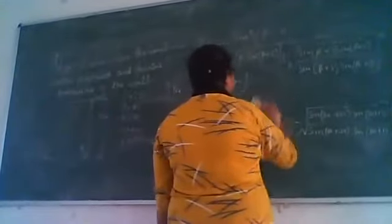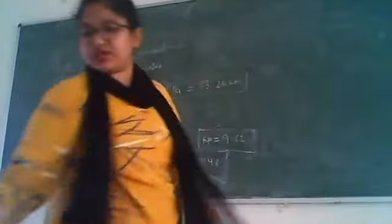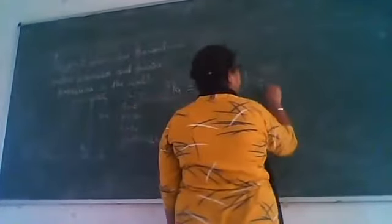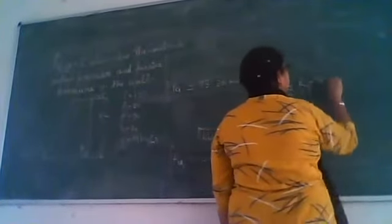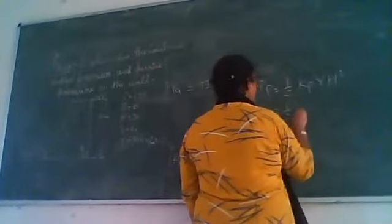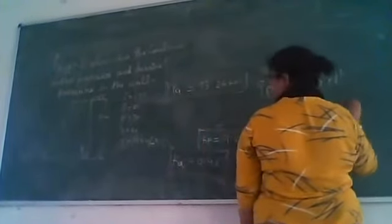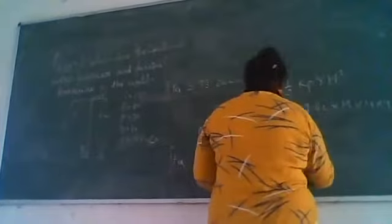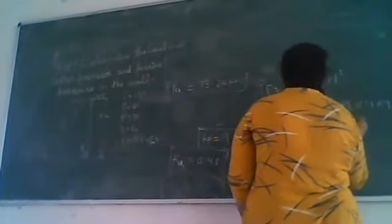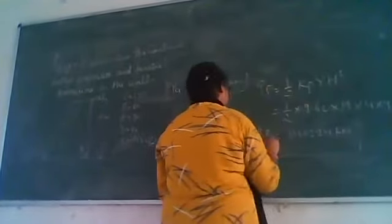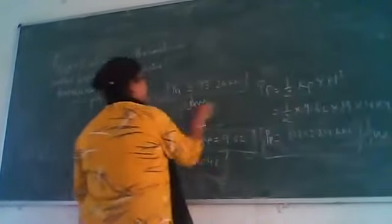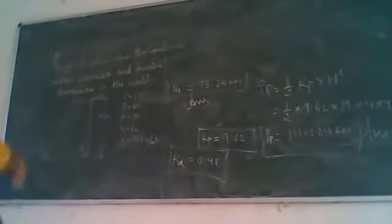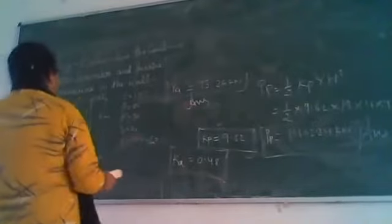Next step is finding Pp, passive pressure by Coulomb's theory. Pp equals one-half Kp gamma h squared. One-half times 9.62 times 19 times 4 squared. My value is 1462.24 kN per meter. This is Pp. Both are my answers.